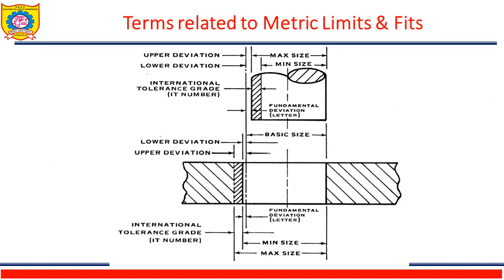Terms related to metric limits and fits. The figure shows the basic size and maximum and minimum dimensions of two mating parts — a shaft and a hole assembled together. The different terminologies shown include: maximum size and minimum size of the shaft, maximum and minimum size of the hole, fundamental deviation for the hole, basic size of the hole or shaft, upper deviation and lower deviation for the shaft, and upper deviation and lower deviation for the hole.